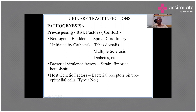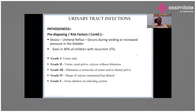Other predisposing factors include bacterial virulence factors. E. coli strains have fimbriae which help them ascend the urinary tract, turning a descending into an ascending urinary tract infection. Uroepithelial cells also have bacterial receptors that essentially invite bacteria inside. These are genetic, non-modifiable host factors. Vesicoureteral reflux also predisposes to urinary tract infections.